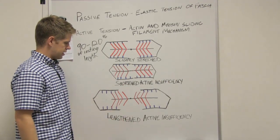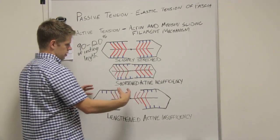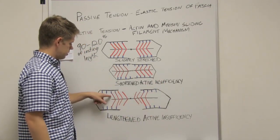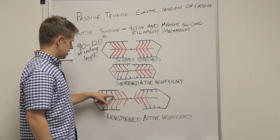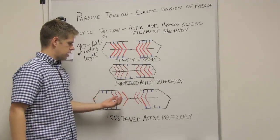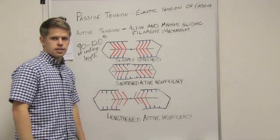And then also in lengthened active insufficiency, the actin is pulled too far apart that the myosin can only actually reach two of the binding sites here. And the further you pull them apart, the less binding sites the myosin can reach.